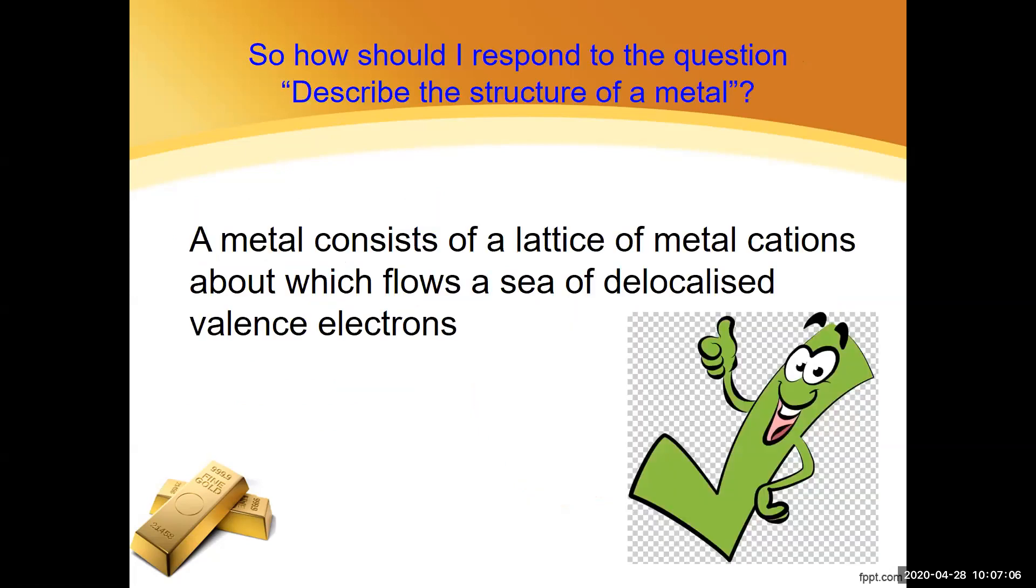But how are you going to respond to that question: describe the structure of a metal? You would say a metal consists of a lattice of metal cations about which flows a sea of delocalized valence electrons. So that's the statement that's going to get you the big tick in tests and exams. All the other stuff, oranges in boxes and so forth is great for trying to visualize how that might be. But that on the screen right now is the statement that I want you to make if you're asked to describe the structure of a metal.